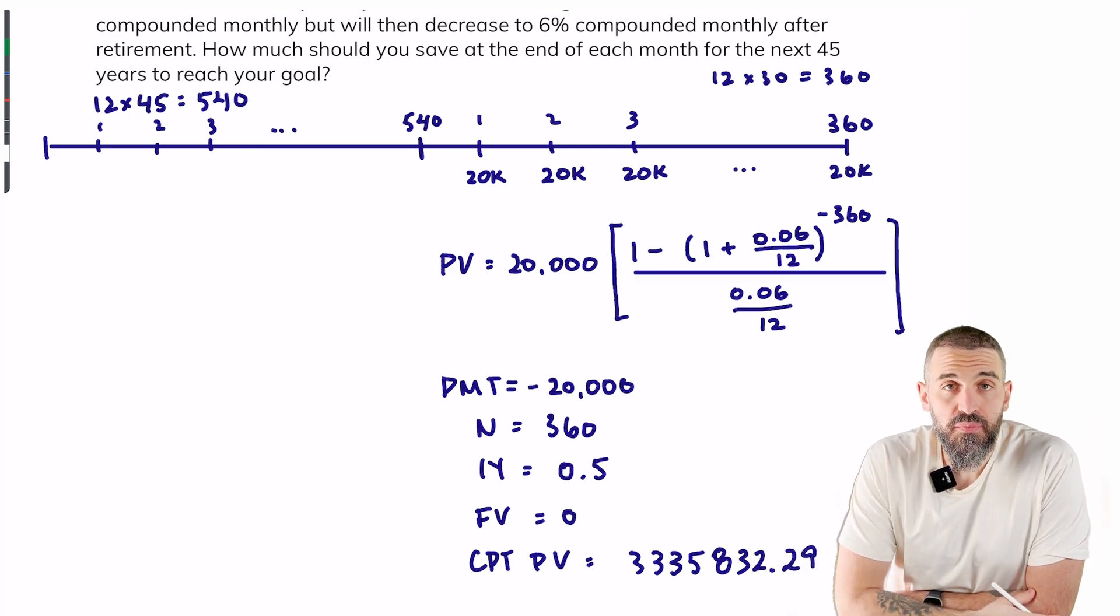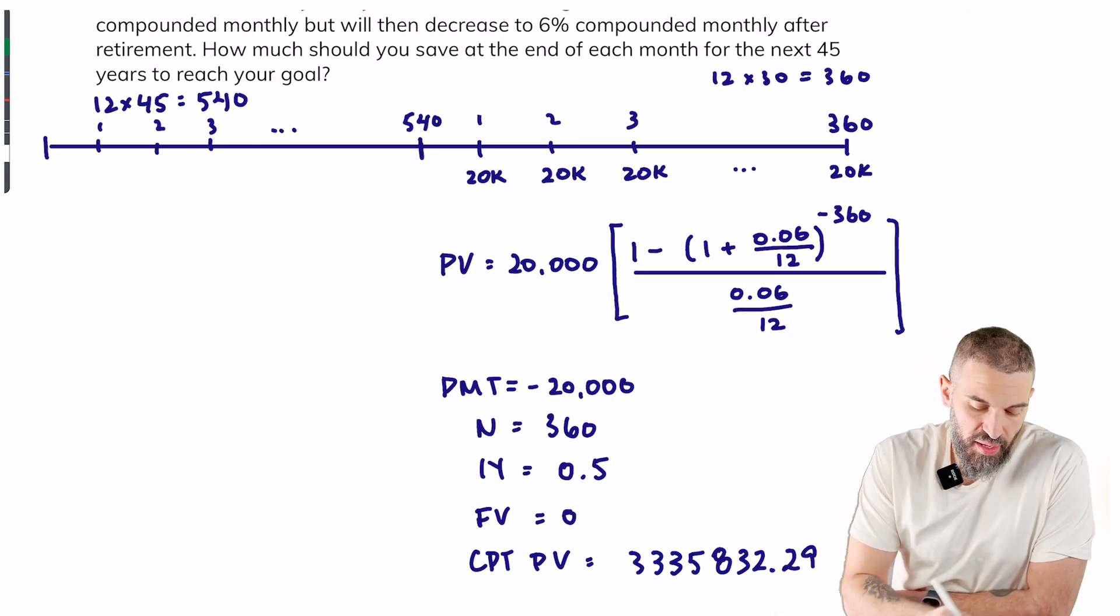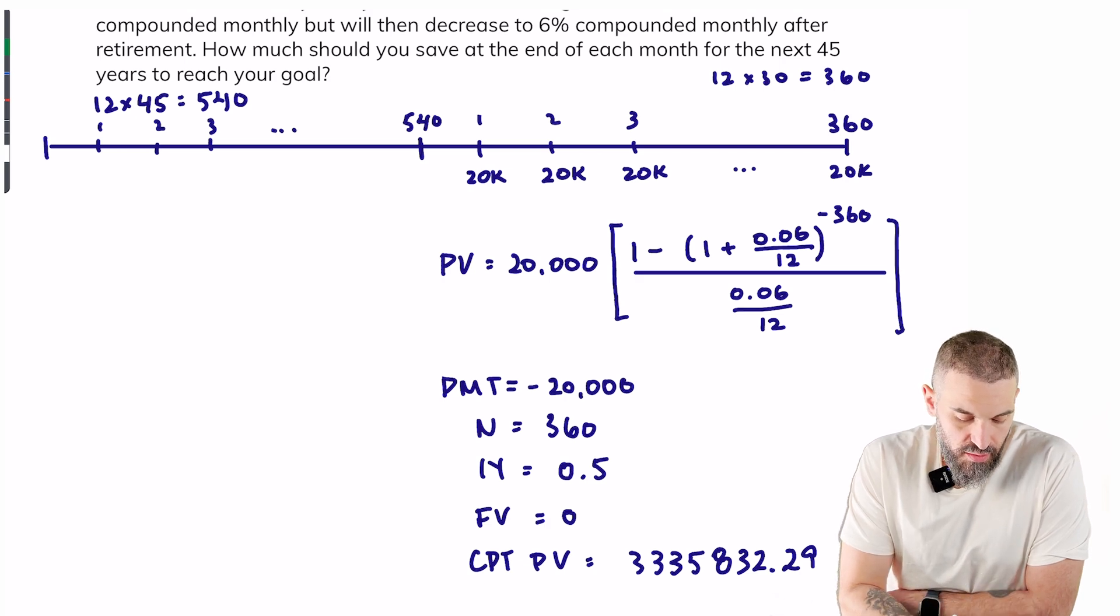So this tells me the day I retire there needs to be that much money in the account. Great. So now we have the future value for the first part. So if I go back to the left now, change my color, now I know that I need to get to that future value.